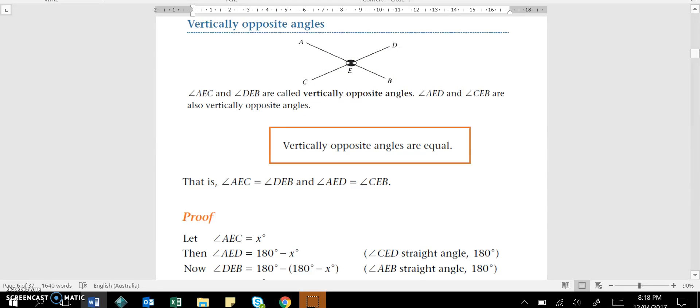So if you have a look in this picture, basically what we're going to be doing is we're going to let angle AEC be X, so that's this one here. We're then going to let angle AED, so that's this one here, be 180 degrees minus X. And basically angle DEB, so this one in here, that is going to be 180 degrees minus what we just had there, 180 minus X.